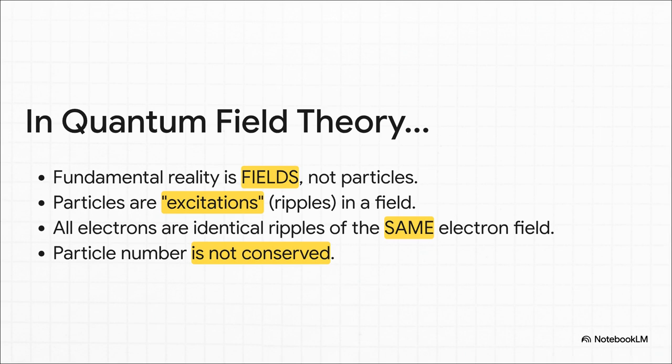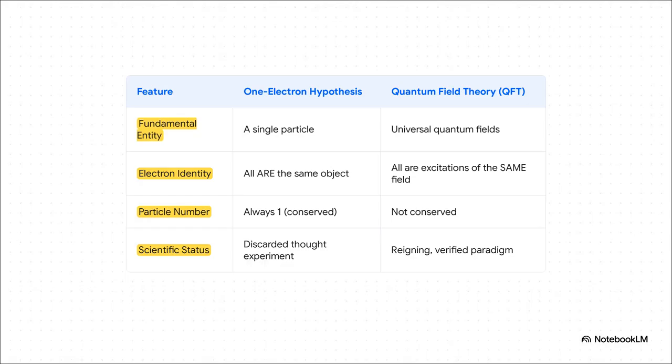And here's the killer point. New ripples can be created. In things like radioactive decay, electrons are literally created out of energy. Something that is completely impossible if there's only one electron to begin with. So the contrast here is just stark. One theory is all about a single, fundamental particle. The other is about universal fields, where particles can pop in and out of existence. One is a beautiful, but discarded, thought experiment. The other is the reigning, verified foundation of all of modern particle physics.